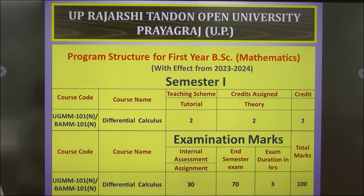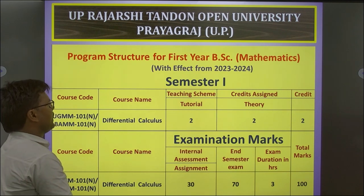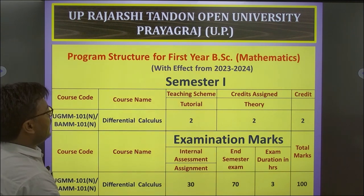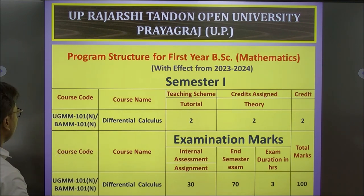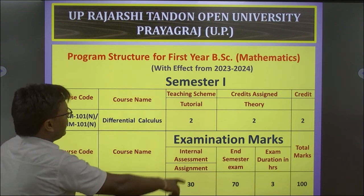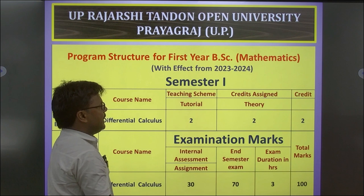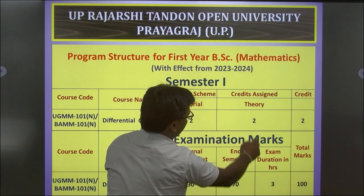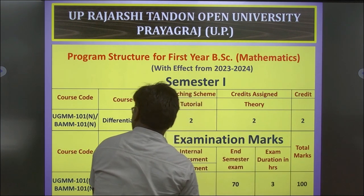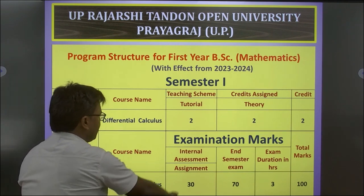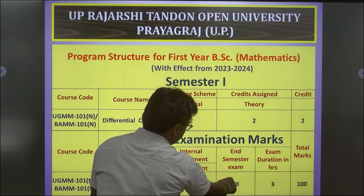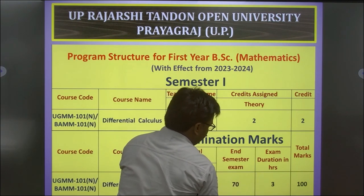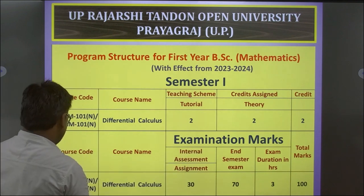For the First Semester BSc Mathematics with effect from 2023-2024: Course Codes UGMM 101 and BAMM 101, Course Name: Differential Calculus. Teaching Scheme: 2 Credits — Theory 2 credits. Examination Marks: Internal Assessment 30 marks, Semester Exam 70 marks, Exam Duration 3 hours, Total Marks 100.